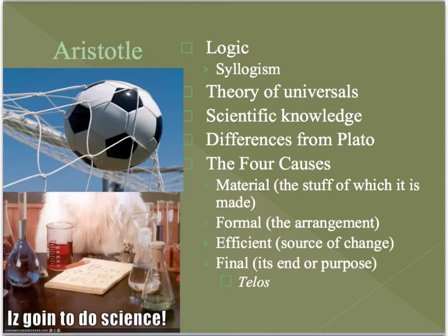The way to differentiate Aristotle from Socrates and Plato is to think of Aristotle as the scientist of the group. He's a very logical, mathematical thinker in how he does his philosophizing. One method he uses is called the syllogism, which takes things we call axioms — things accepted as true — puts these statements together, and produces a conclusion. It's almost mathematical in nature, using if-then statements or logical statements with words.